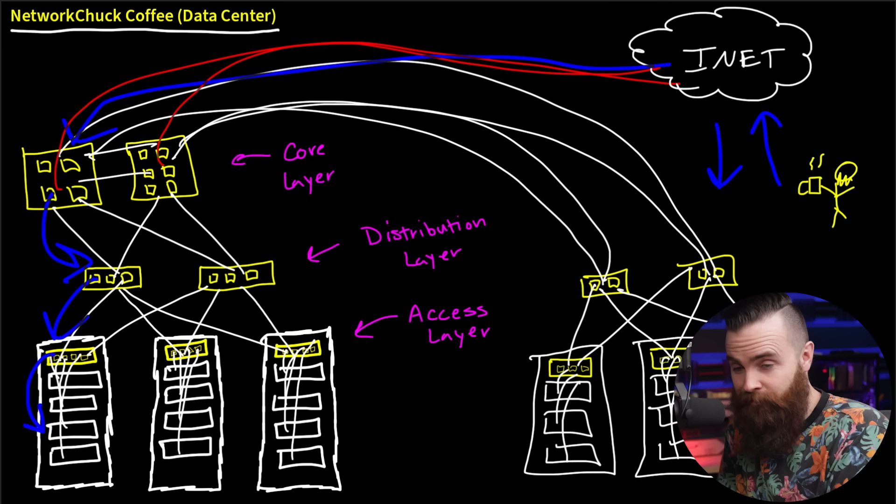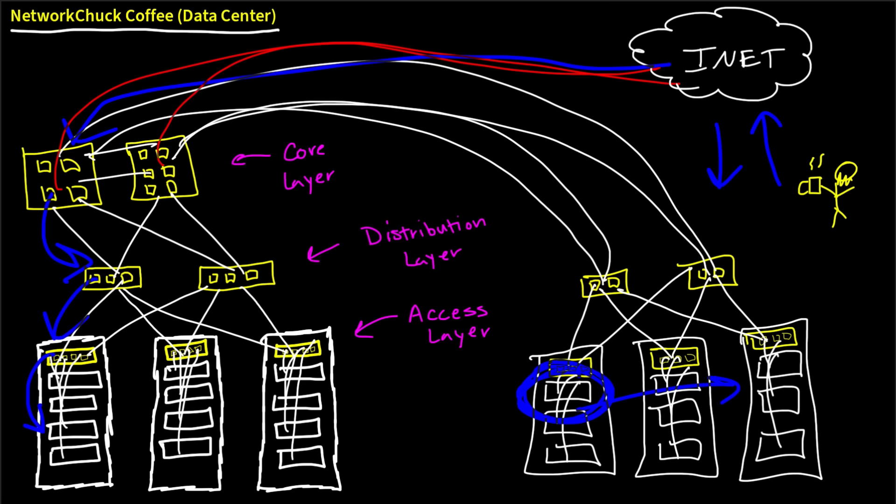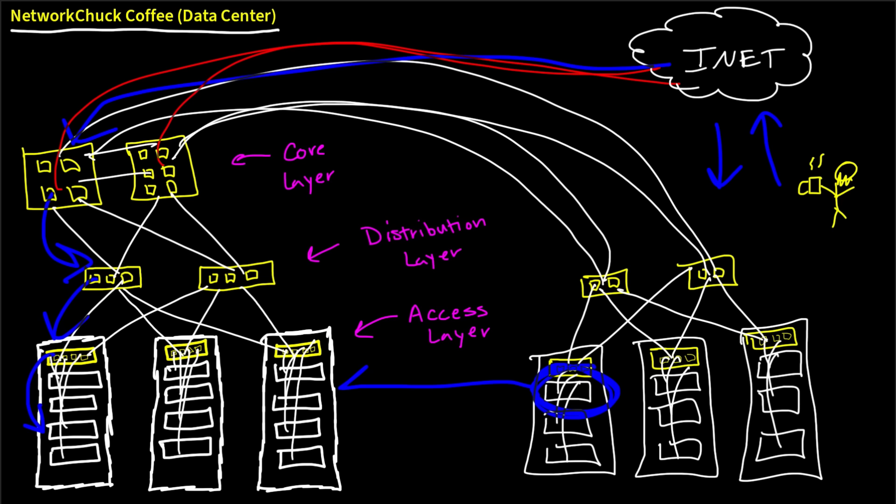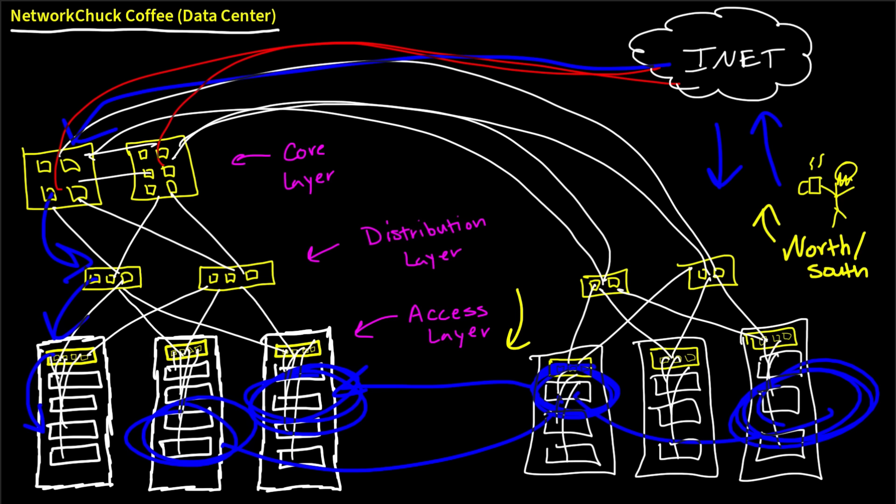But things started to change. When this design was popular, we didn't worry too much about these servers talking to servers and storage and resources between the racks. This type of traffic was not important until virtualization came in. With virtualization, our data centers became more distributed, which basically means that servers in this rack now have a pretty good reason to talk to servers over here in this rack - and maybe in this rack and this rack. Basically, servers within the data center want to or need to communicate with each other. That's what we call east-west traffic.